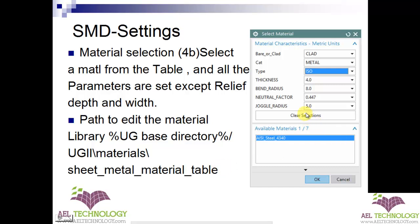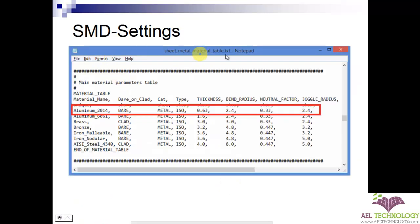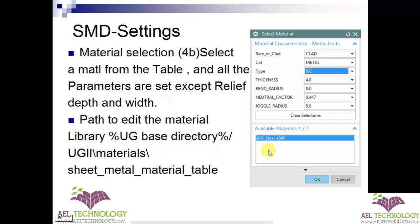The details you need to enter include whether the material is bare or clad, the material type, thickness, bend radius, neutral factor, joggle radius, etc. Open this file to add a new material to the library, enter the details, and save it. Once saved, the material library gets updated and you can select that material and use the parameters you have set.